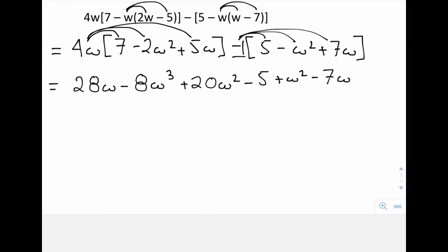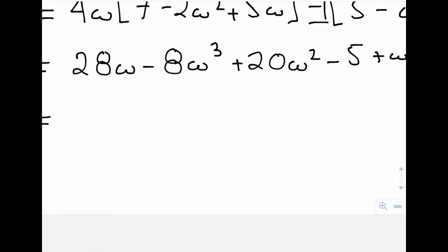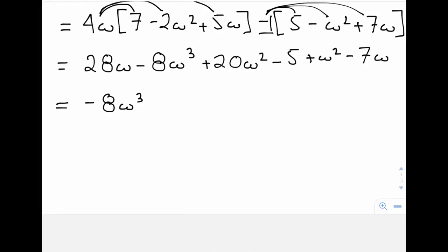And now I can collect like terms. The negative 8w cubed just stays the same. Do I have any squared terms? Yes I do. I have this 20w squared and w squared becomes 21w squared. The 28 minus the 7 becomes positive 21w. And finally I have the negative 5 at the end.